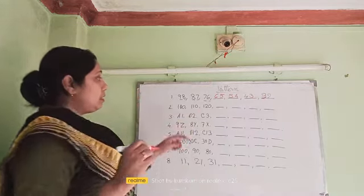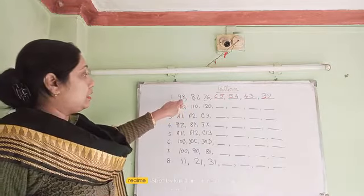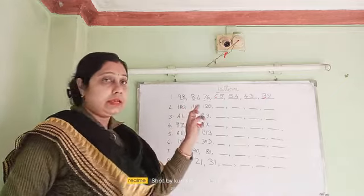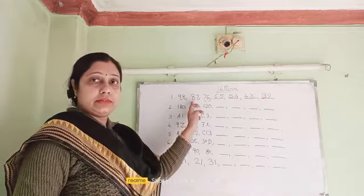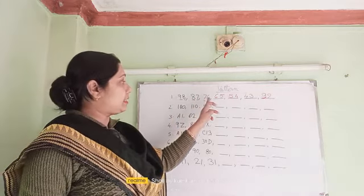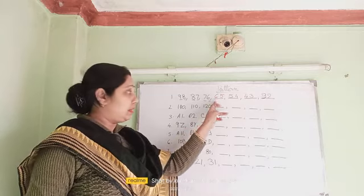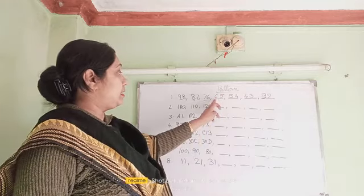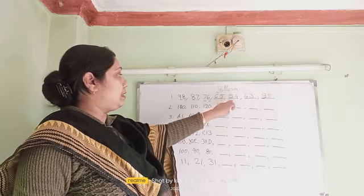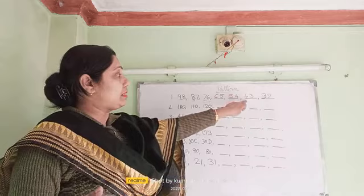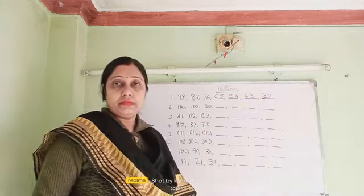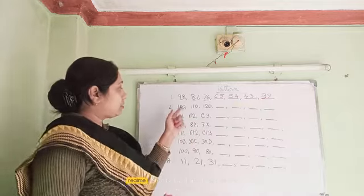Let me repeat so you can understand. The number 98 ends with 8, and the next number starts with 8. It ends with 7, and the next number starts with 7. It ends with 6, so the next starts with 6 — giving 65. Then 65 ends with 5, so next is 54. Then 54 ends with 4, giving 43, and then 32.